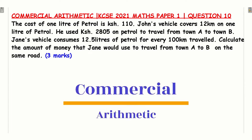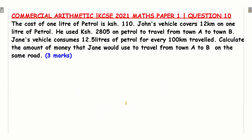The cost of 1 liter of petrol is 110 shillings. John's vehicle covers 12 kilometers on 1 liter of petrol. He used 2,805 shillings on petrol to travel from town A to town B. Jane's vehicle consumes 12.5 liters of petrol for every 100 kilometers traveled. Calculate the amount of money that Jane would use to travel from town A to B on the same road.